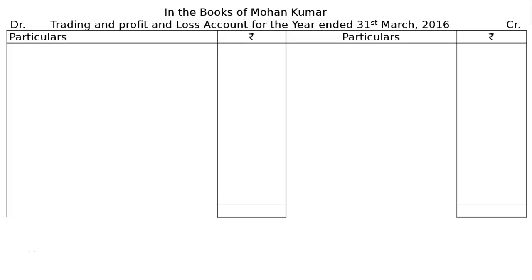The question provides a trial balance as at 31st March 2016 extracted from the books of Mohan Kumar. We need to prepare the Trading and Profit and Loss Account for the year ended 31st March 2016. It is a very good question with no ambiguity — every adjustment is provided. After drawing the proper format, we start from the credit side.